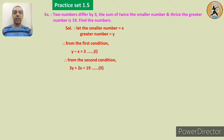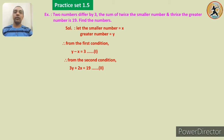So we get two equations in two variables: y minus x equals 3, and 3y plus 2x equals 19. We have to eliminate one variable. We can eliminate x because it appears with opposite signs in both equations, but we must make the coefficients equal. The coefficient of x in the second equation is 2, so we multiply the first equation by 2 to get the third equation: 2y minus 2x equals 6.